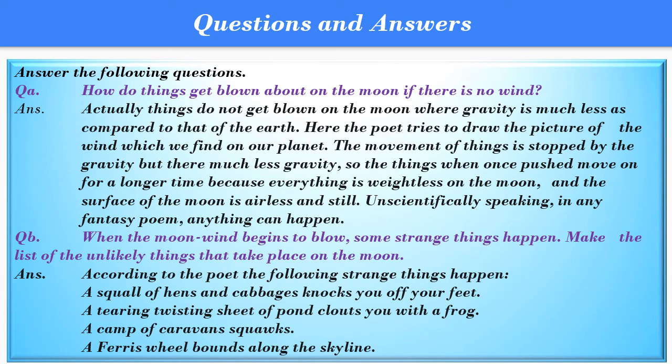Question A: How do things get blown about on the moon if there is no wind? Answer: Actually things do not get blown on the moon where gravity is much less compared to that of the earth. Here the poet tries to draw a picture of the wind we find on our planet. The movement of things is stopped by gravity, but there is much less gravity on the moon. So things, once pushed, move on for a longer time because everything is weightless and the surface of the moon is airless and still. Unscientifically speaking, in any fantasy poem, anything can happen.